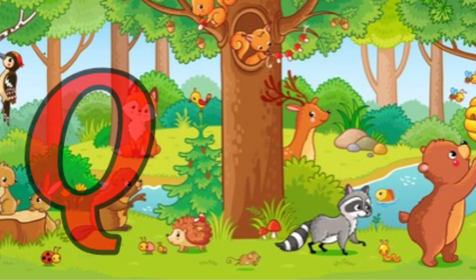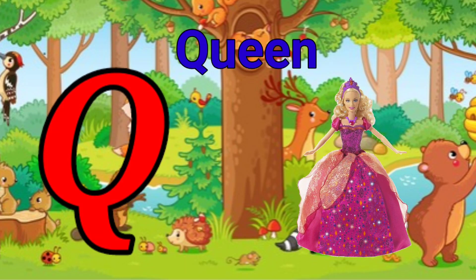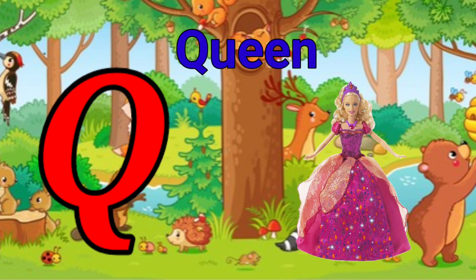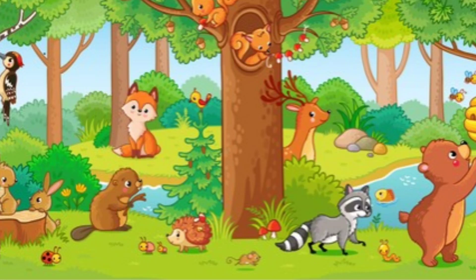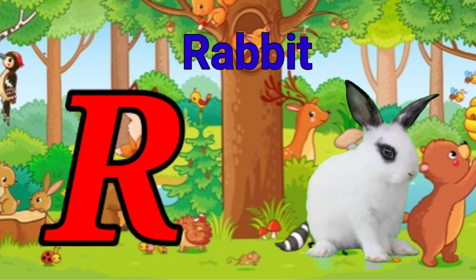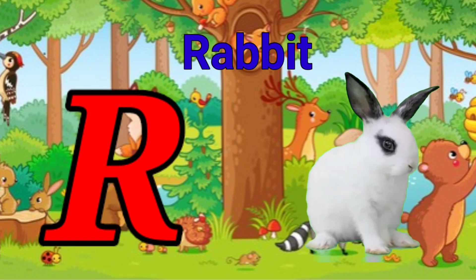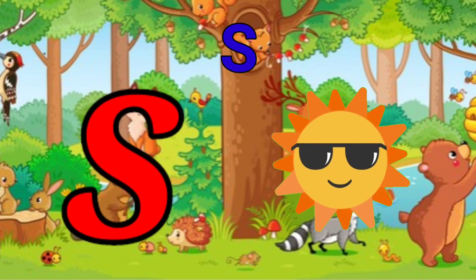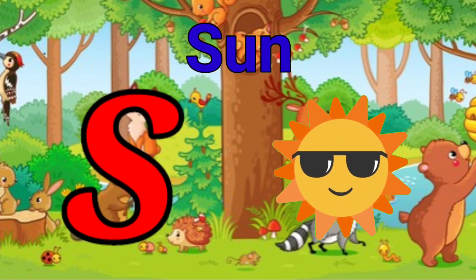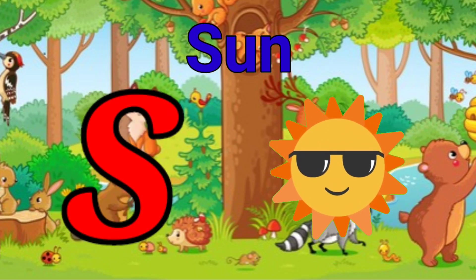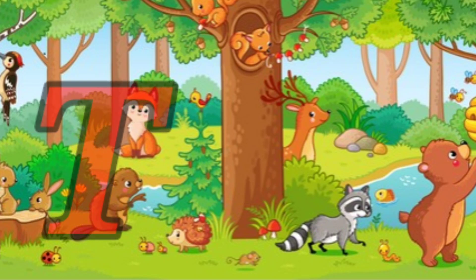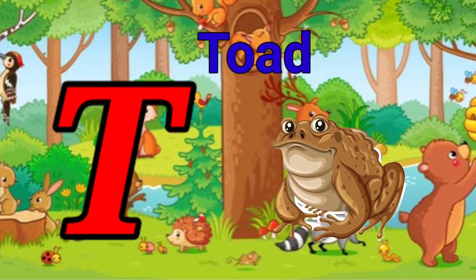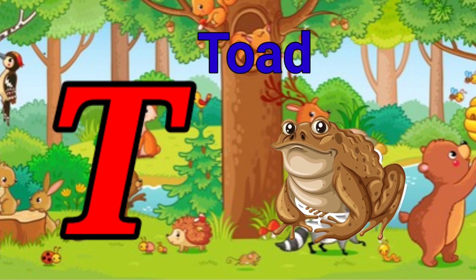Q is for queen, k-k-queen. R is for rabbit, r-r-rabbit. S is for sun, s-s-sun. T is for toad, t-t-t-toad.